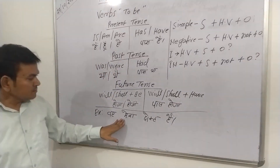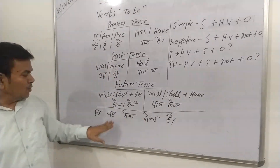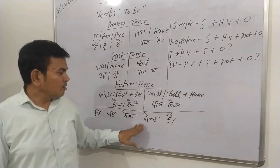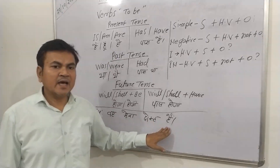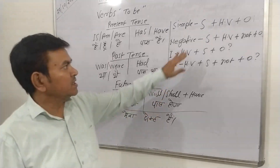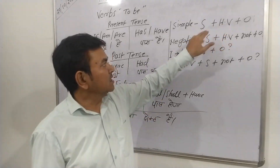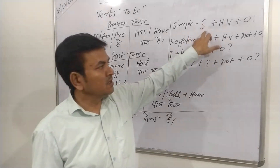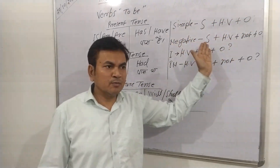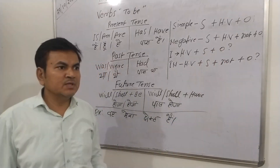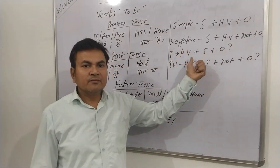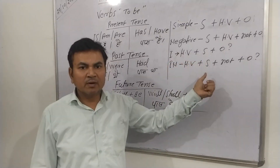Here in this sentence, 'he' is the subject, 'my friend' is the object, and 'is' is the helping word. Now we put these three words into the formula, then the sentence will become: affirmative — 'he is my friend'; negative — 'he is not my friend'; interrogative — 'is he my friend?'; and interrogative negative — 'is he not my friend?'